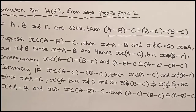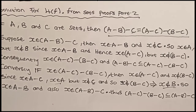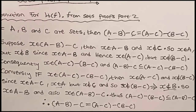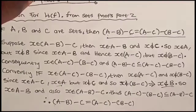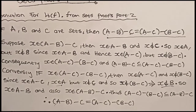Therefore, we can conclude that A-(B-C) and (A-C)-(B-C) are the same. And that's it for the proof. Look at it carefully and try to see if you understand. Moving to the business of the day: symmetric difference.